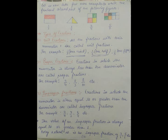Third, improper fractions: fractions in which the numerator is equal to or greater than the denominator are called improper fractions. For example, four by four, seven by two, five by four, etc. The value of an improper fraction is always equal to or greater than one. Every natural number is an improper fraction; for example, three by one, five by one, etc.